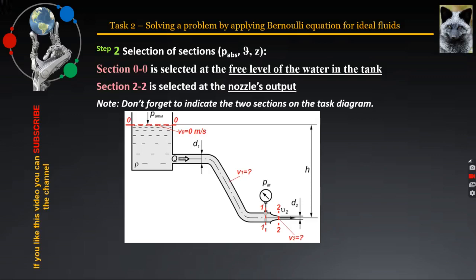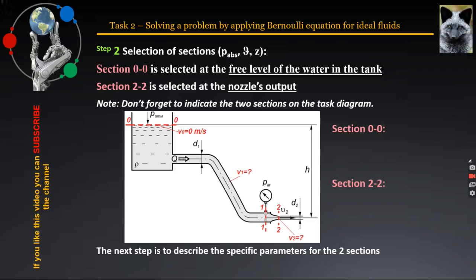The following action is related to the description of the operating parameters in the preselected sections, which I propose to perform in the same combination for both. The determination of the absolute pressure for the two sections is performed taking into account their specific features. For section 00, as the tank is open, only atmospheric pressure acts, which means that P0 will be equal to P atmosphere. Since the water leaves the pipe flowing freely into the atmosphere, for section 22, P2 will likewise be equal to P atmosphere.